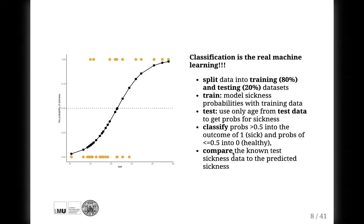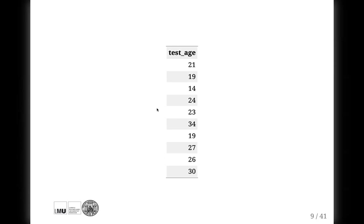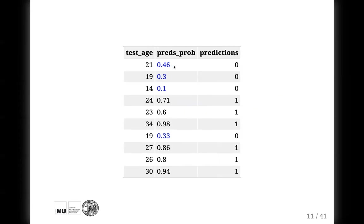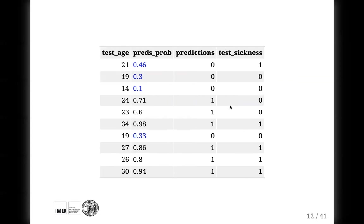Let's have a simple example to repeat this process and understand it more properly. Imagine our model is trained. We hide the sickness data — the real data from our testing dataset — from this model, and put only age data into it. The model will then predict the probability of getting sick based on this age data. We classify these probabilities into zeros and ones: probabilities below 0.5 become zero and above 0.5 become one. Since we know everything about these 20 people, we can compare the real data to the predicted data — and that's exactly how we check the quality of predictions.